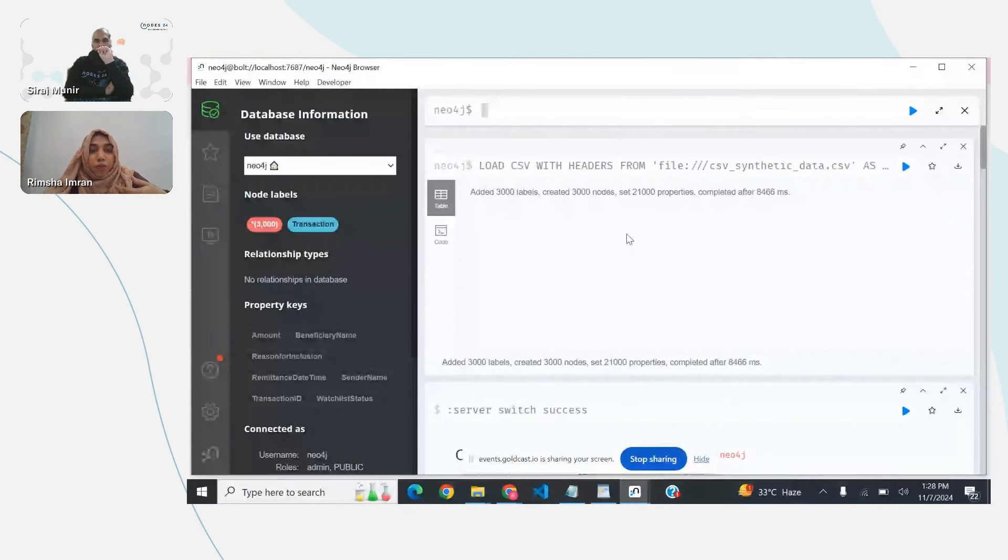Here's the updated query, which creates sender and beneficiary nodes and adds relationships between them. In this query, using the send money edge, this query provides a more meaningful representation of the data by connecting entities. We use the merge statement to ensure the sender and beneficiary are represented as unique nodes. We then create a relationship between them, which adds depth to our graph model. Let me run this query and let's see the results.